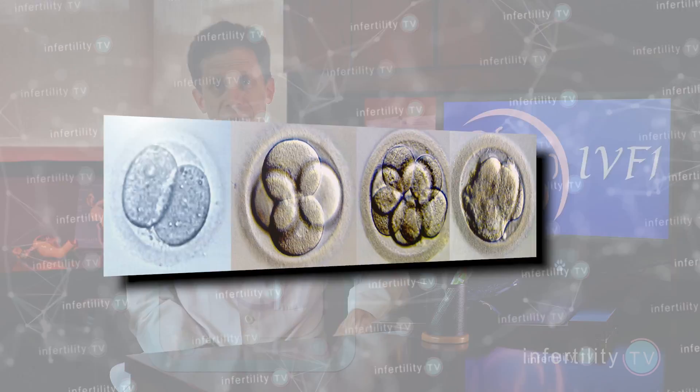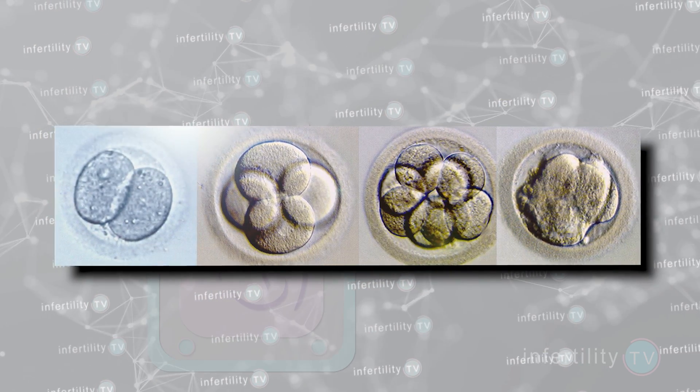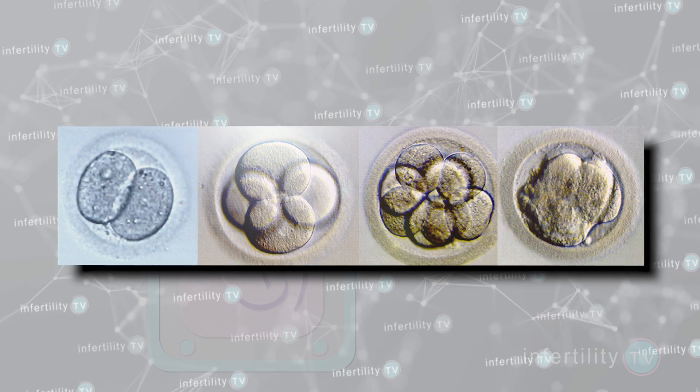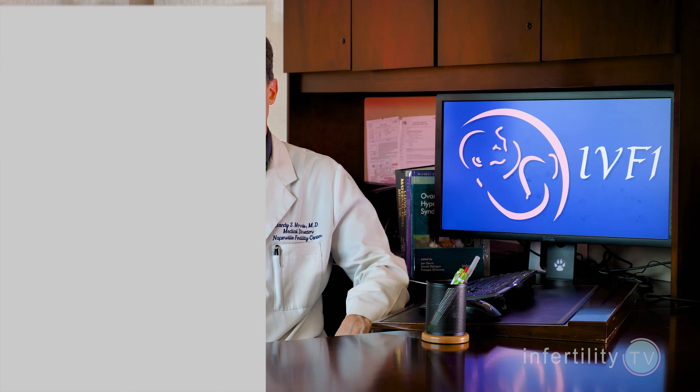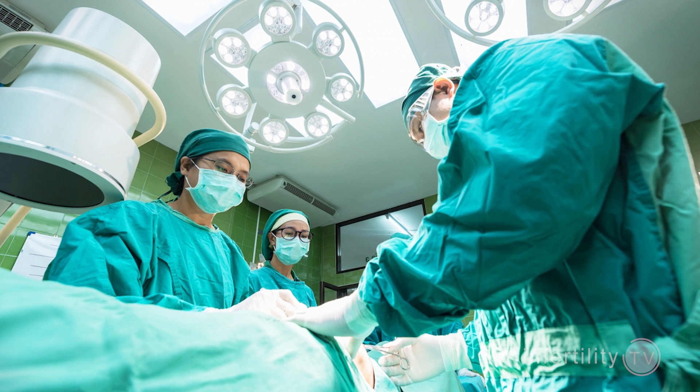We know that healthy and viable embryos should reach certain stages of development at certain times. Embryos that are slow and don't reach these milestones when they are supposed to have a lower chance for pregnancy. In many cases these are problems that cannot be fixed. These are still considered abnormal embryos, but the abnormalities are not as severe, so sometimes these embryos may still be able to develop and implant into the uterus.